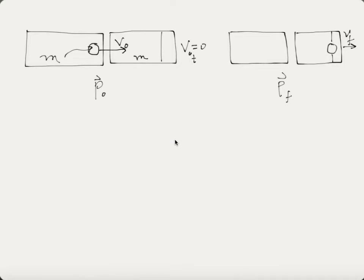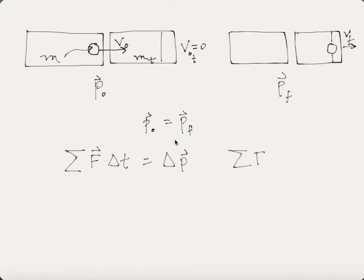The ball has a mass and the tube has a mass. In the second scenario, all of the momentum is carried by the tube and the ball together. We know that initial momentum equals final momentum, based on the impulse-momentum theorem. If we consider that all net forces acting on the system equal zero, this implies that delta p equals zero.